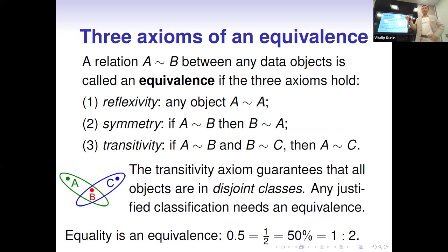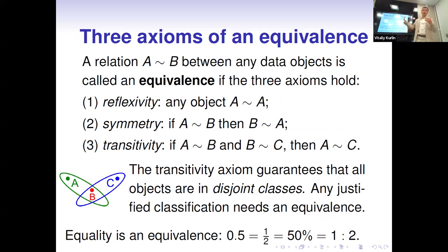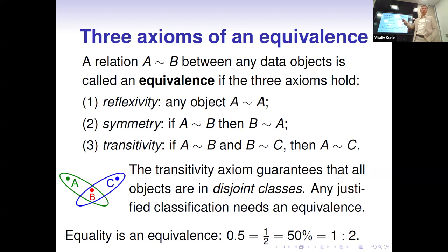We can consider many different equivalence relations on our objects. All of them must satisfy three basic axioms: reflexivity, symmetry, and transitivity. Transitivity is especially important because it guarantees that our classification under an equivalence relation produces disjoint classes — no confusion if two classes overlap. We learn about equivalences even from primary school; the usual equality relation is an equivalence, because any number can be written in many different numerical forms.